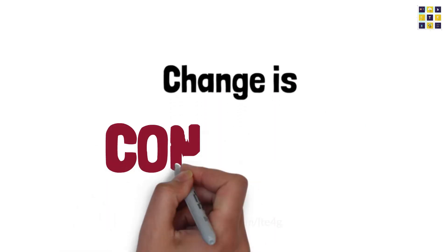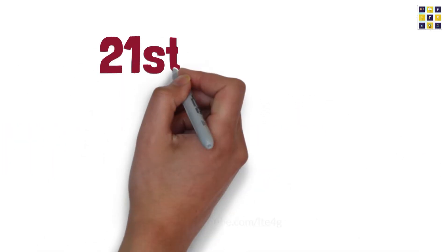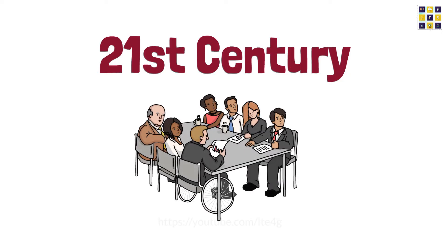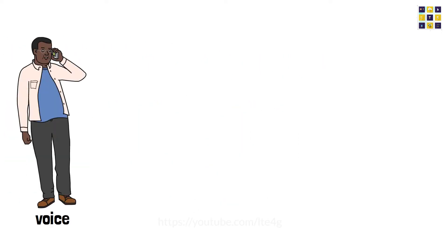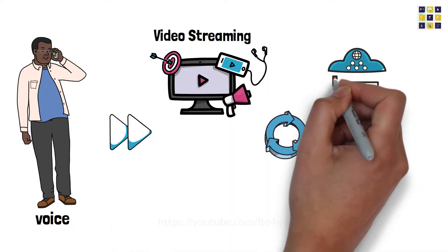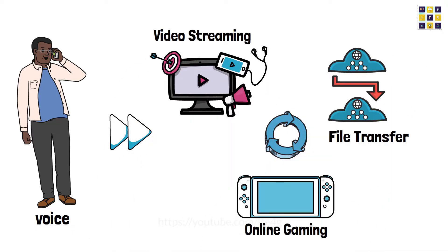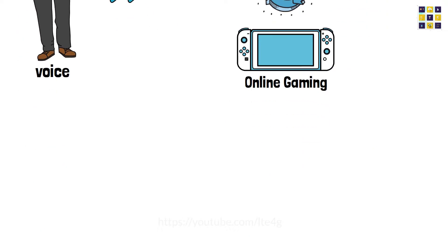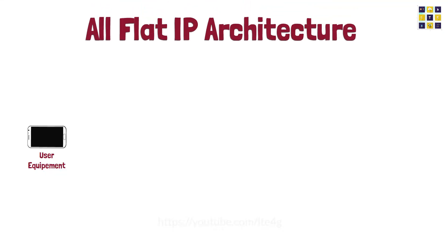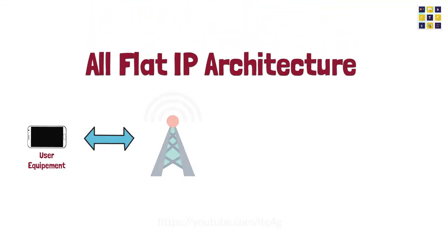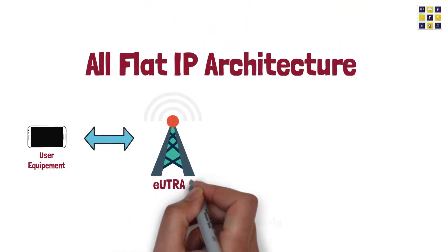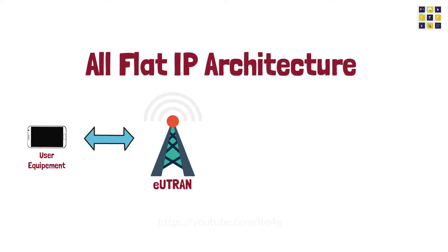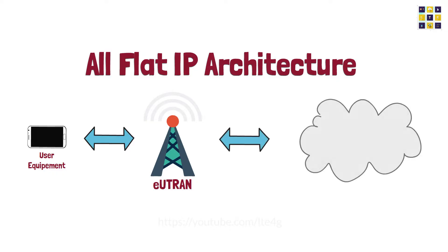They say change is the only constant. With the advent of the 21st century, the focus of telecommunication changed from voice to highly profitable data-centric services such as video streaming, file transfer, online gaming, etc. In order to accommodate the tsunami of data and the advancements, a new all-flat IP architecture consisting of radio called the Evolved UMTS Radio Access Network or EUTRAN and Core called Evolved Packet Core or EPC was adopted.